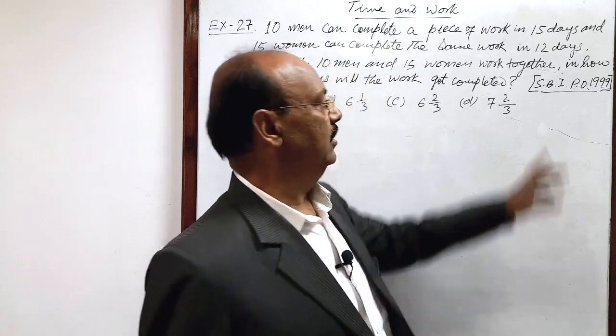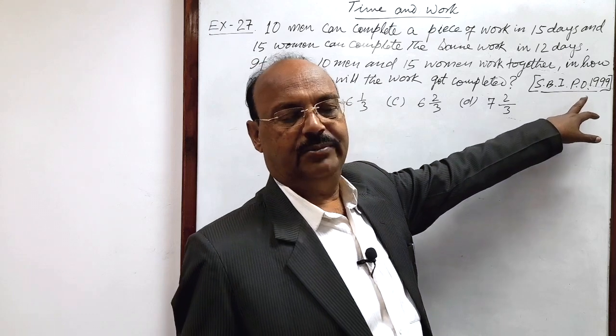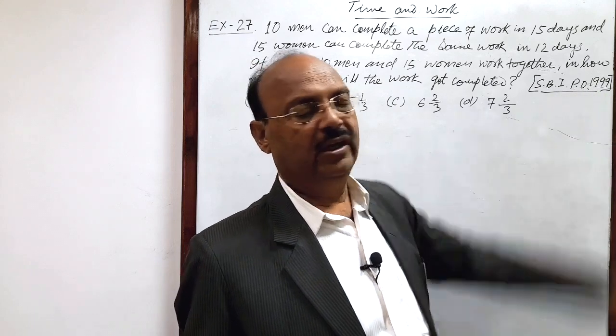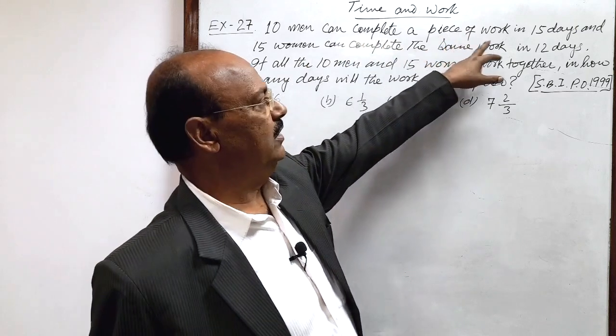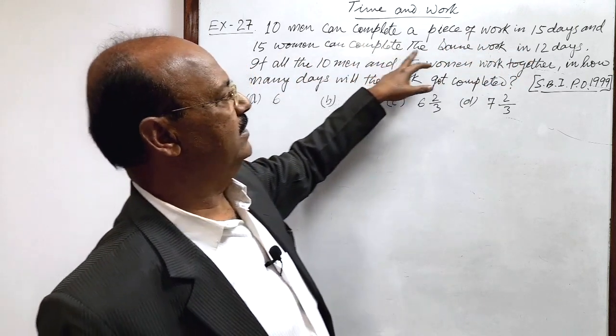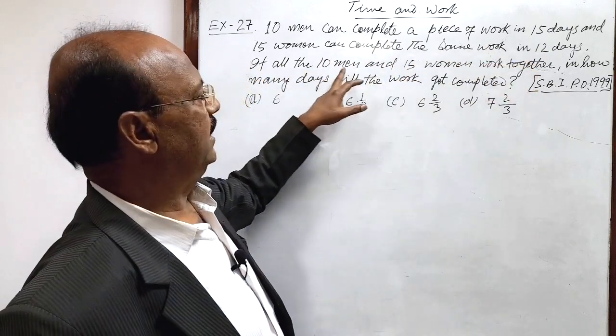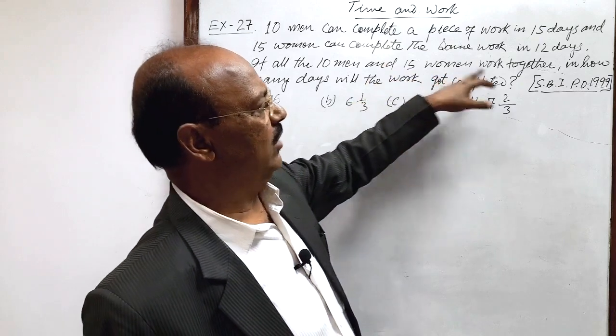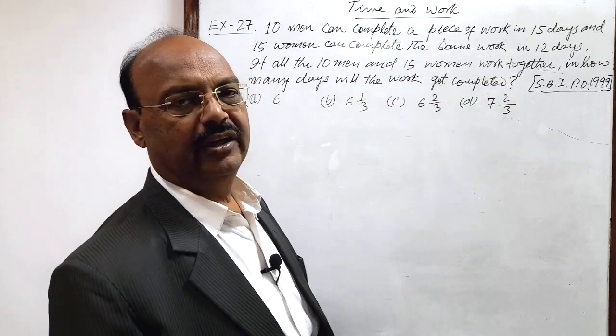This question has been asked in State Bank of India Probationary Officers Examination in 1999. The question is: 10 men can complete a piece of work in 15 days and 15 women can complete the same work in 12 days. If all the 10 men and 15 women work together, in how many days will the work get completed?